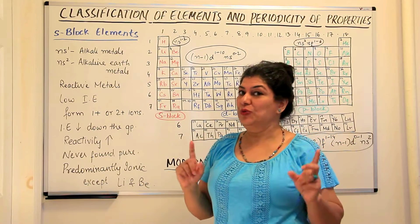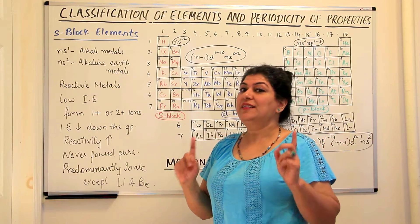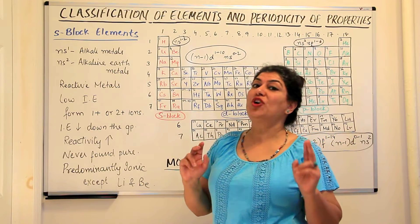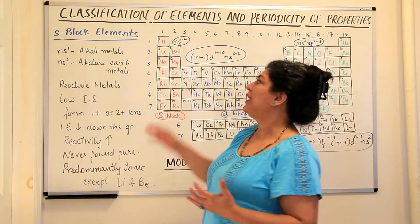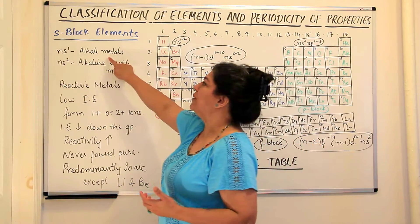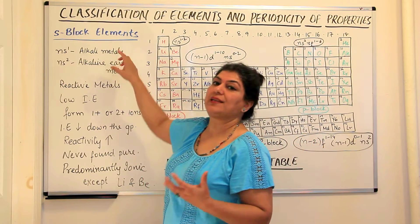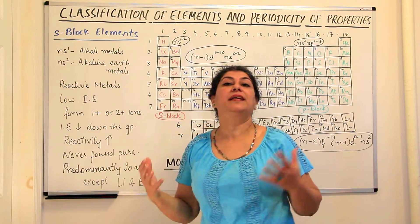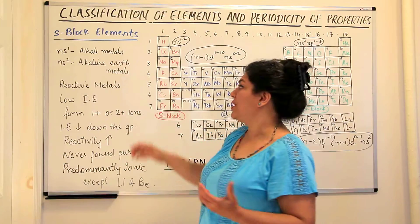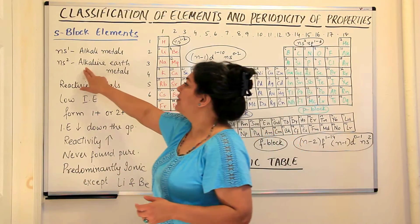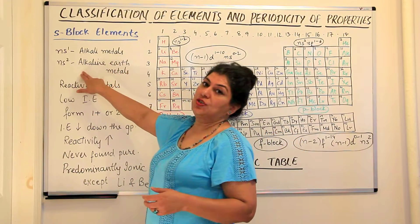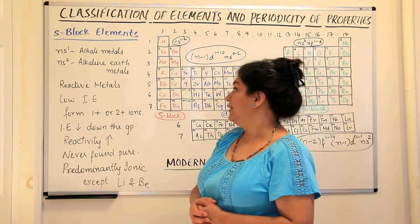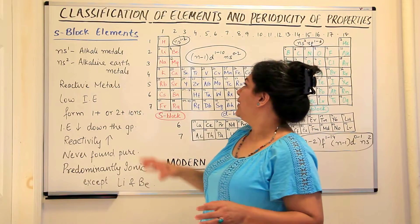These are predominantly metals, and that's why we call them alkali metals and alkaline earth metals, because these are the metals which are found in the earth, so they were called the alkaline earth metals.